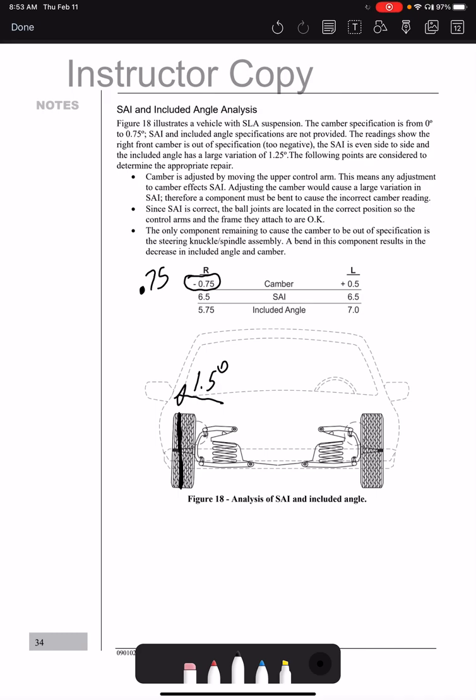And again, when you change it, you're also going to be lowering the SAI, which means that the SAI would change by 1.5 degrees, which brings the SAI to 5 degrees on the left-hand side. But again, your included angle doesn't change because you're changing both the camber and the SAI at the same time.